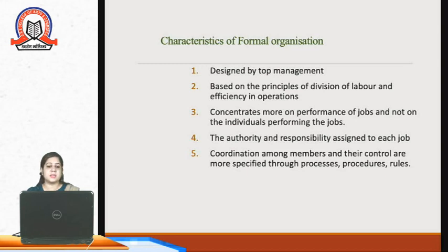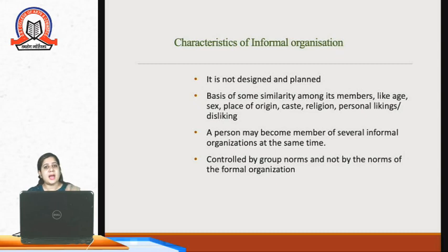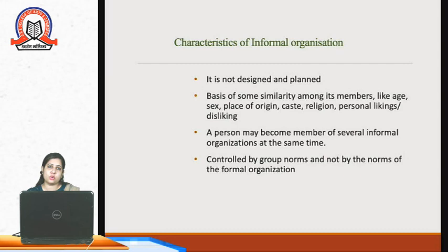Coordination among members in formal organizations is required on a large scale as they go through various processes and procedures. Informal organizations, on the other hand, depend on interpersonal relationships. These groups are created on the basis of similarities such as likes, dislikes, relations, caste, gender, or age. Each member can join or exit the group several times because group norms are not mandatory.